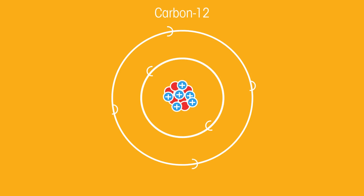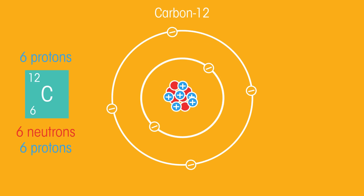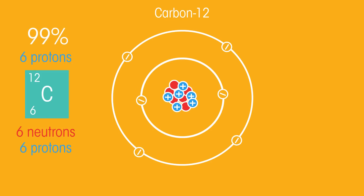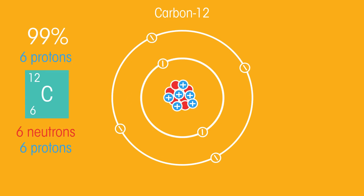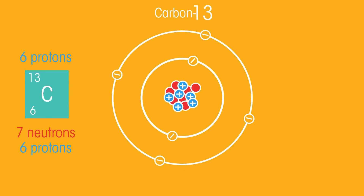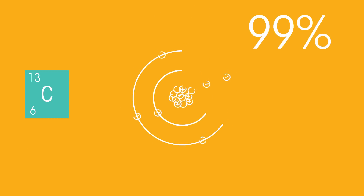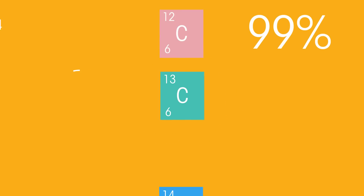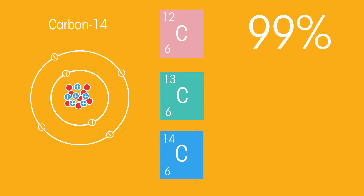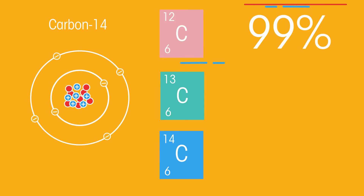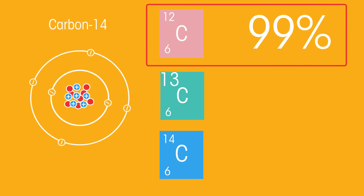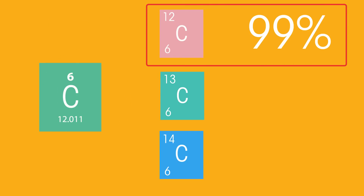For example, around 99% of carbon atoms have six neutrons, which means about 99% of them have a mass number of 12. But around 1% have an extra neutron — we call this isotope carbon-13. And there is carbon-14, which is even rarer, with eight neutrons. Because most of the carbon isotopes have a mass of 12, but some have 13, and even fewer have 14, this is why the mass number on the periodic table is just a little higher than 12.